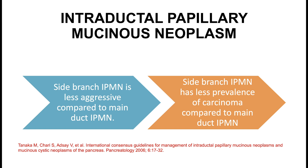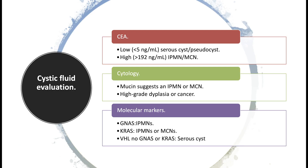As compared to main duct IPMN, side branch IPMNs are less aggressive with fewer chances of becoming malignant. Regarding cyst fluid analysis, high CEA levels are seen within IPMN and mucinous cystic neoplasms. Molecular markers like GNAS and KRAS can be seen in IPMNs.